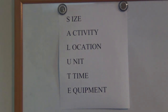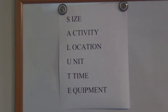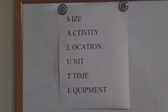S stands for size — the amount of people they have. A stands for activity — what they are doing, if they are doing anything dangerous or where they are headed. L stands for location — where they are when you saw them.